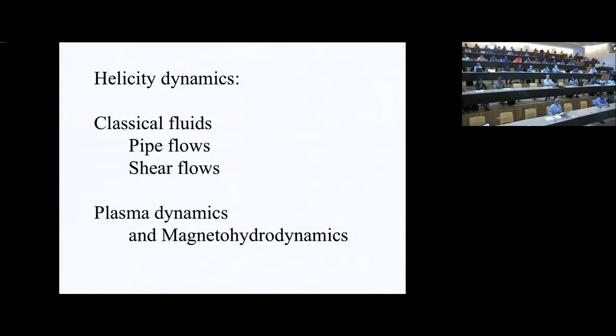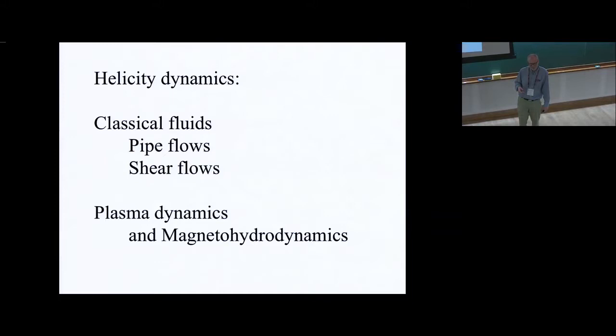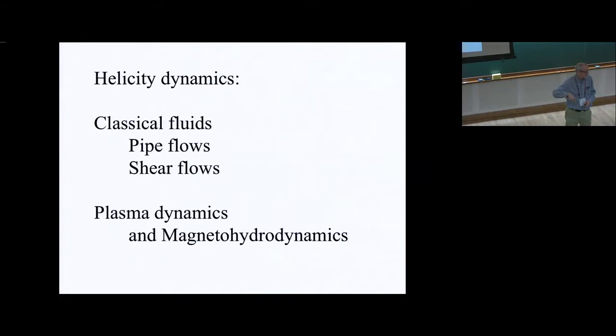Helicity dynamics in classical fluids has some very interesting things. I was reflecting back to conversations from Srini when we were building the large pipe experiment. You cautioned me to make sure it doesn't have any inlet swirl because it takes a very long time for that to decay. Why does this swirl take so long to decay in pipe flow? Shouldn't it be very frictional in high Reynolds number pipe flow?